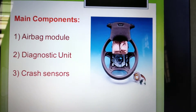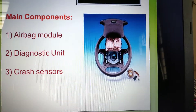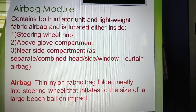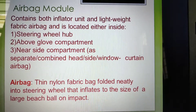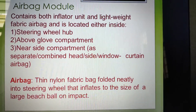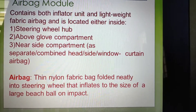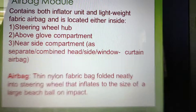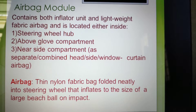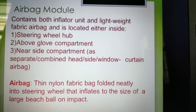The main components of the airbag are: airbag modules, diagnostic units, and the crash sensor. Airbag modules contain both the inflator unit and the lightweight fabric airbag. They are located inside the steering wheel hub, above the glove compartment, and near the side compartment, either as a separate or combined head, side, or window curtain airbag. The airbag is made of nylon fabric and is folded neatly into the steering wheel, inflating to the size of a large beach ball on impact.